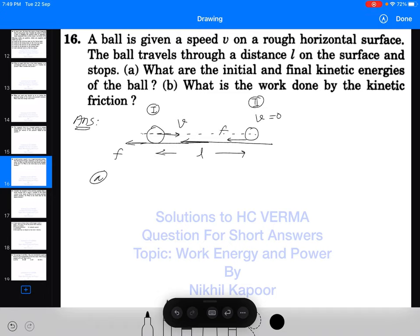Now, in the first case, what is the initial and final kinetic energy of the body? The initial kinetic energy of the ball is half m v square. Final kinetic energy of the ball is 0.